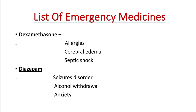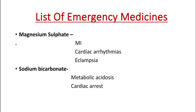Next is diazepam. The functional class of diazepam is anti-anxiety and anti-convulsant. It is used in seizure disorders, alcohol withdrawal symptoms, and anxiety. Next is magnesium sulphate, which is used in myocardial infarction, cardiac arrhythmias, and eclampsia.